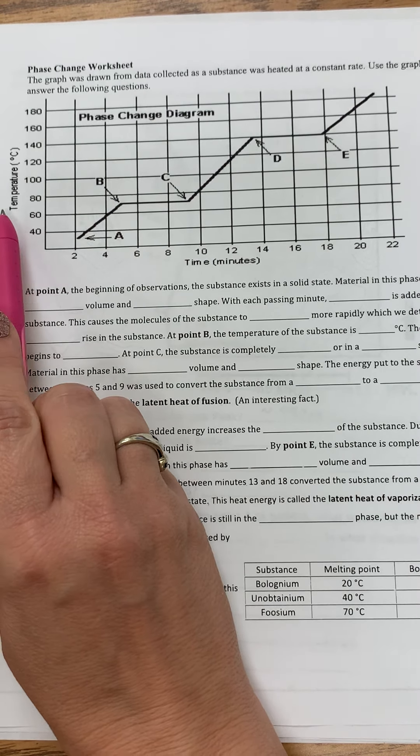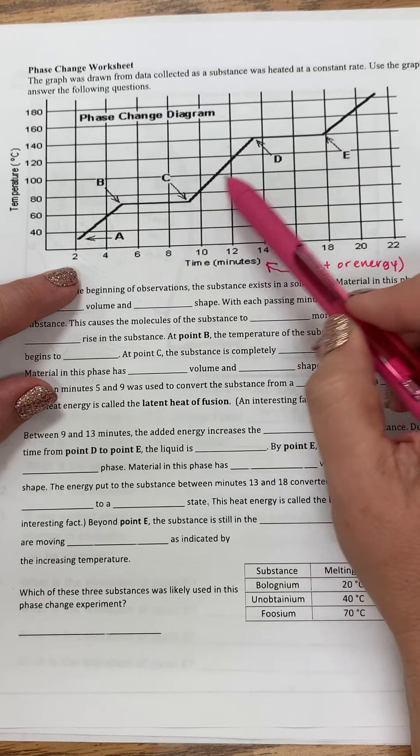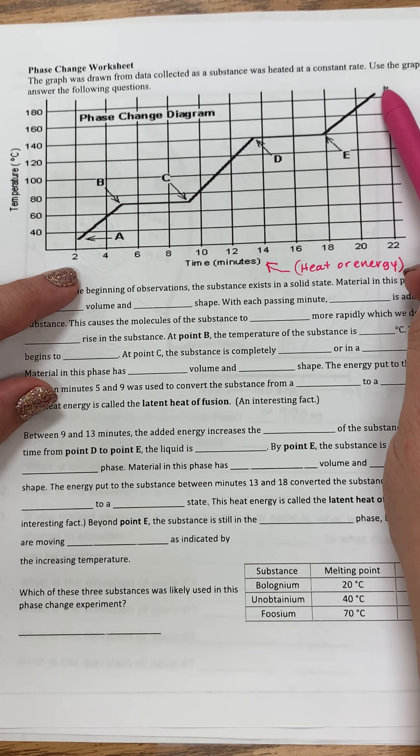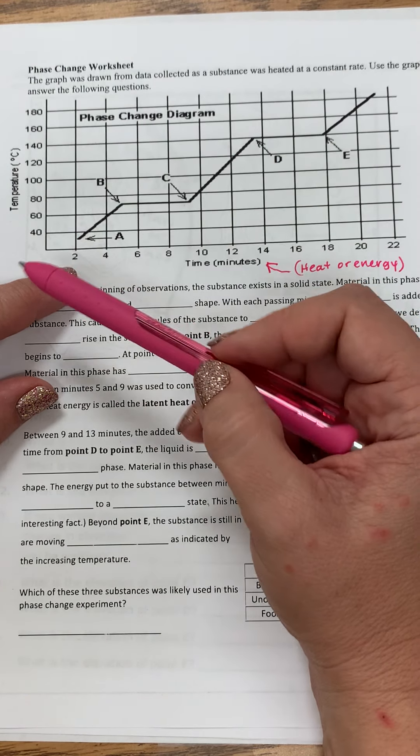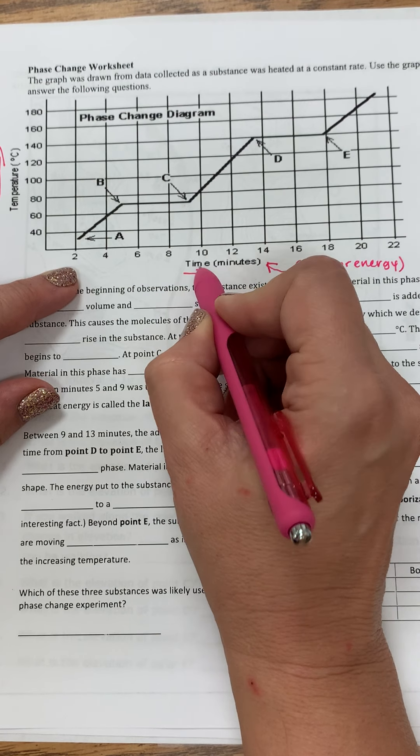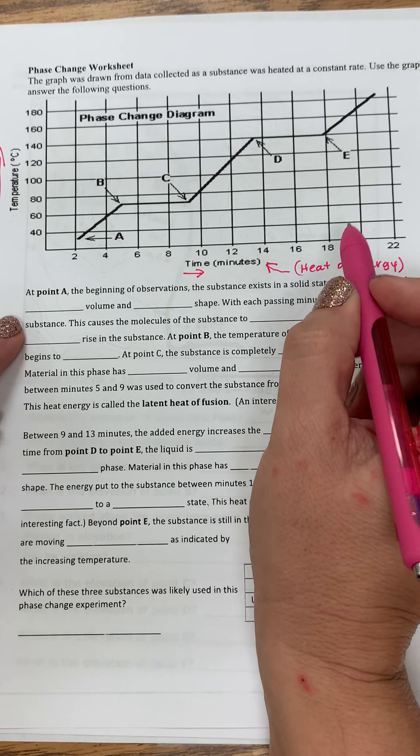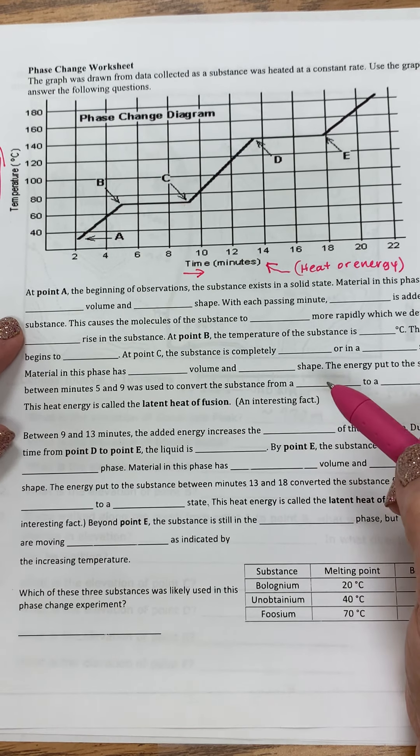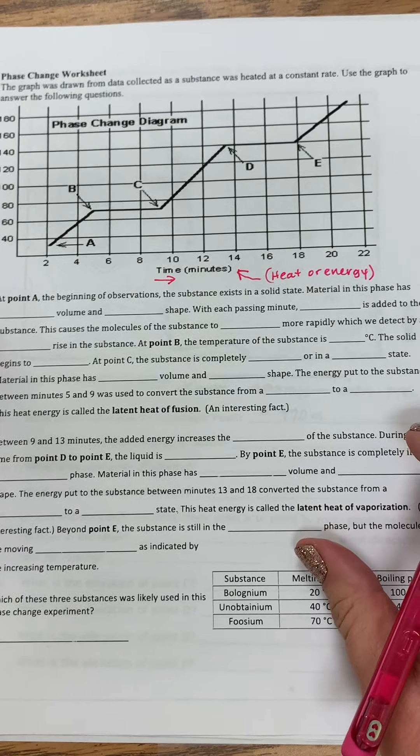And the graph is increasing to this point. When it flatlines, it's staying the same. Then it's increasing again. Then it's flatlining and it's increasing again. So as time goes on, you see that it is slowly rising up in the chart where the temperature is concerned. So temperature is increasing this way. Time is increasing this way.